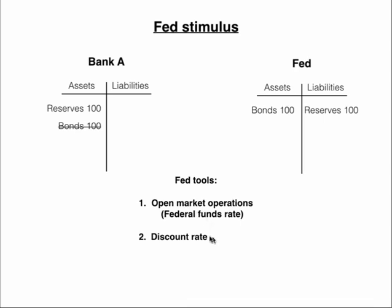Other tools the Fed has — although open market operations are really the main tool — include the discount rate, which is the rate at which banks can borrow directly from the Fed. Generally, banks won't do that because the discount rate is set above the Fed funds rate, making it more expensive. There's also a stigma attached to borrowing from the Fed, because if you can't borrow in the Fed funds market, something's probably wrong and you're in a desperate situation. But lowering the discount rate and making it easier for banks to borrow would be another possible stimulus tool.